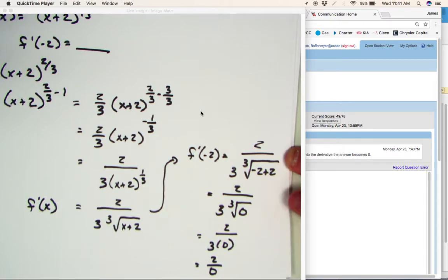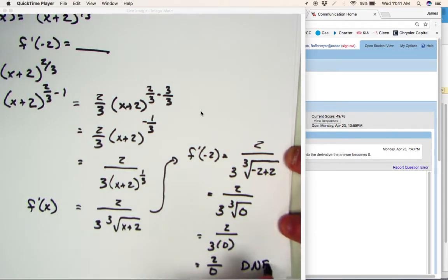Now, we can't have a 0 in the bottom of a fraction. So that's why your answer would not exist, because we have a 0 in the bottom of our fraction.